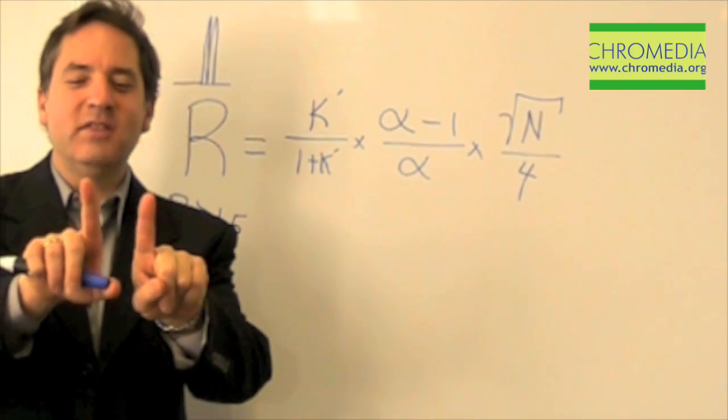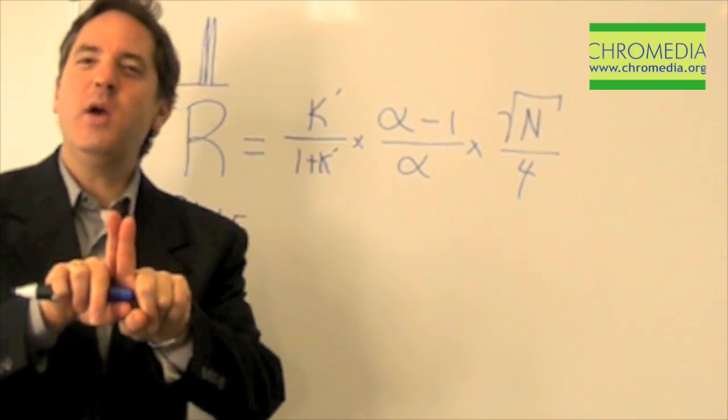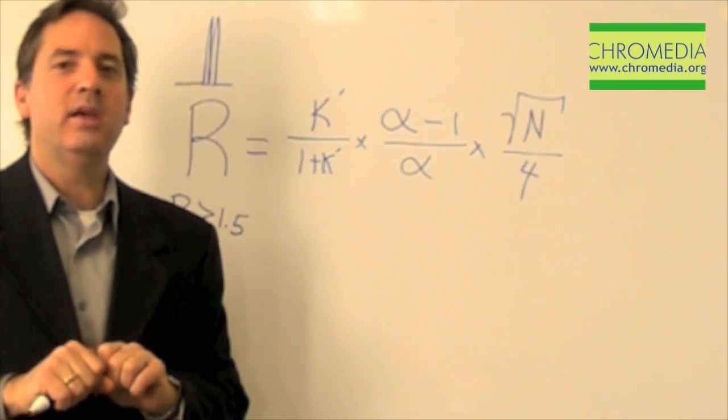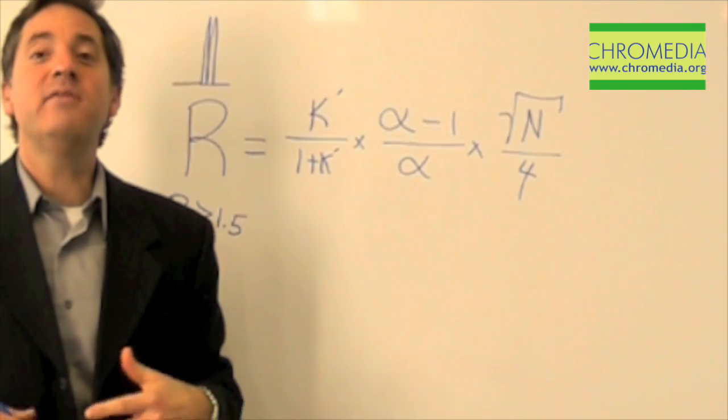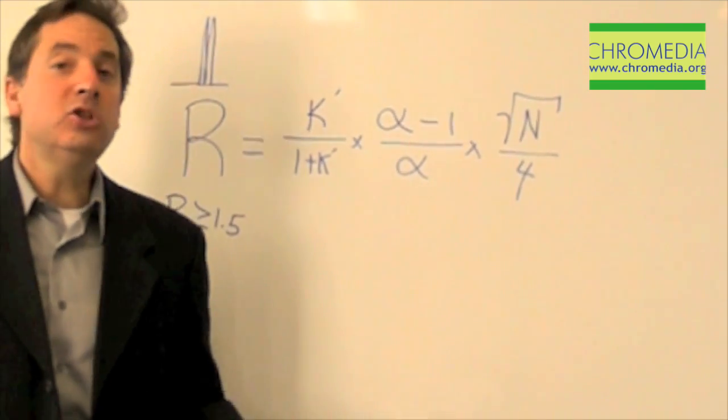If you have a resolution of less than 1.5, then you have a valley. And we don't want that. We don't want a valley in between our peaks, because we have not completed our task.